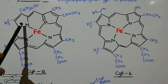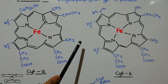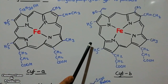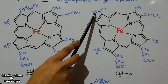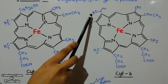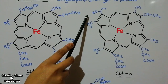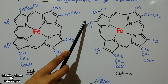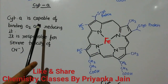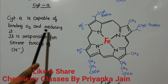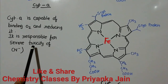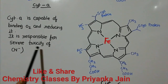In cytochrome b, a different group is present instead of the -CH=CH₂ group. Cytochrome a is capable of binding oxygen and reducing it, and it is responsible for the toxicity of the cyanide ion.